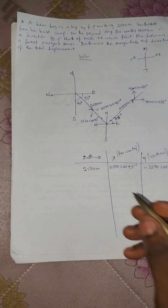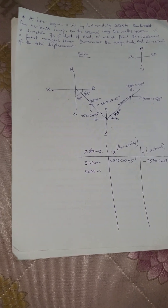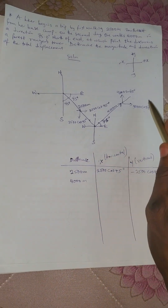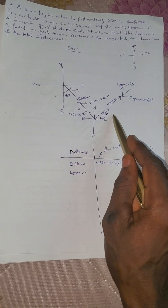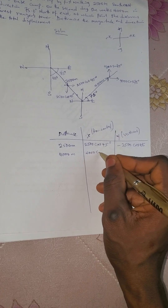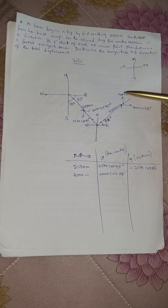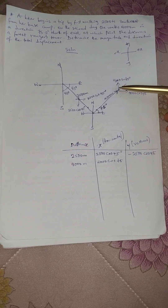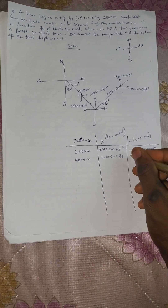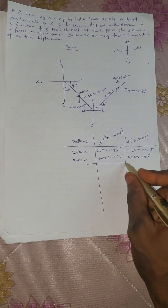Now let us resolve the second vector, which is 4000 meters. The horizontal component — does it fall to positive x or negative x? It falls to the positive x, so that is 4000 cos 75. For the vertical axis of this vector, does it fall to positive or negative? It falls to the positive axis, and that is why it is 4000 sine 75.